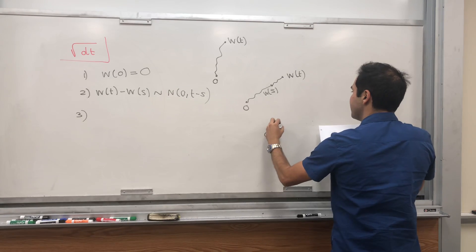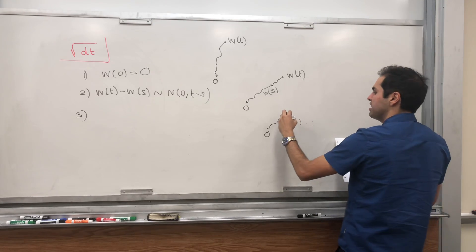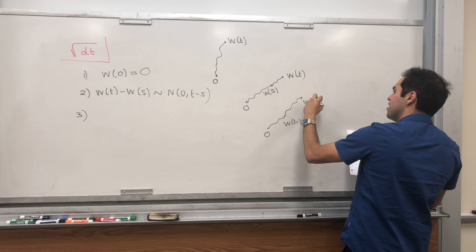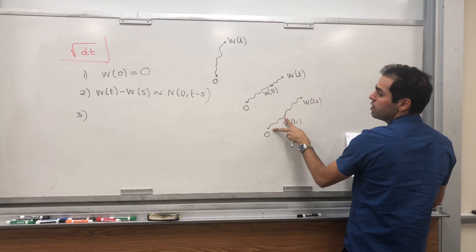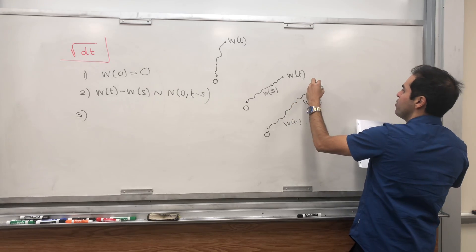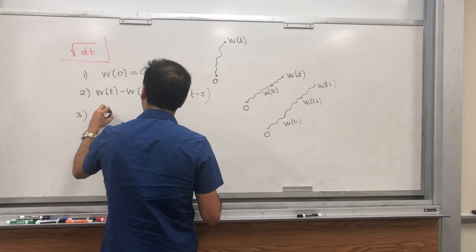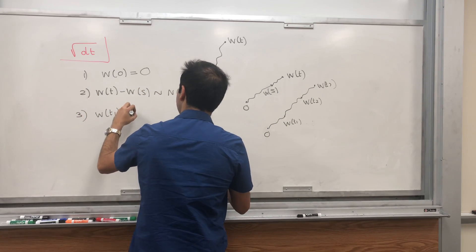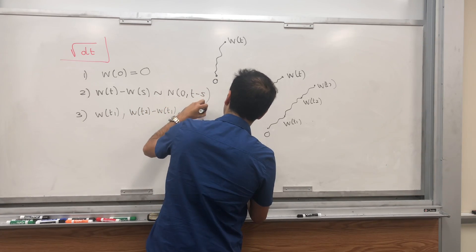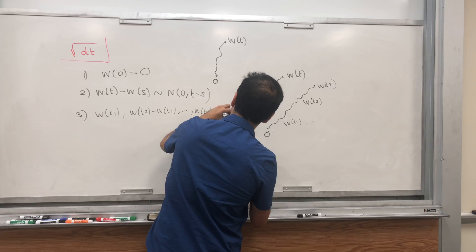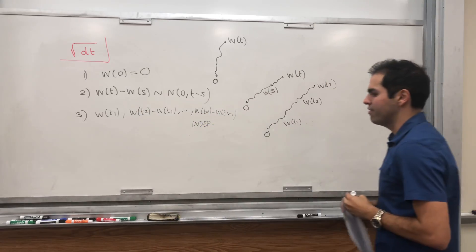So if you start at zero and you go to W_t1, you kind of forget what happened in the past, and then the difference W_t2 minus W_t1 should be independent of what happened before. Same with W_t3 minus W_t2, etc. So for all partitions W_t1, W_t2 minus W_t1, ..., W_tn minus W_{tn-1} — these are all independent random variables.